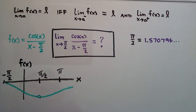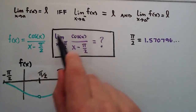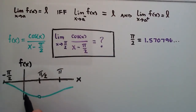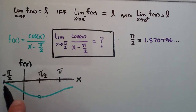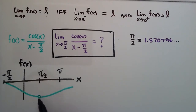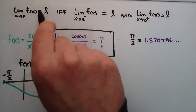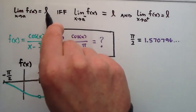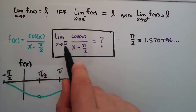So basically, if we approach pi over 2 from the left — we're not actually evaluating f(pi/2), we're getting close to it — and this is leading to the same value from the left as when we approach from the right, then the limit is going to equal some value L. That's why we can find the limit of this function as x approaches pi over 2.